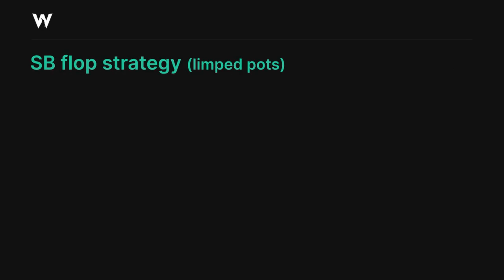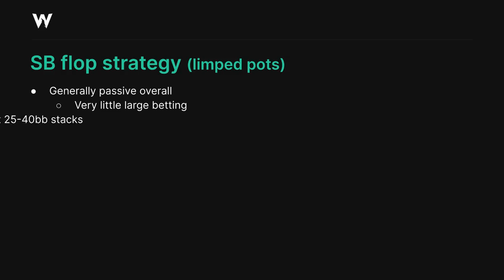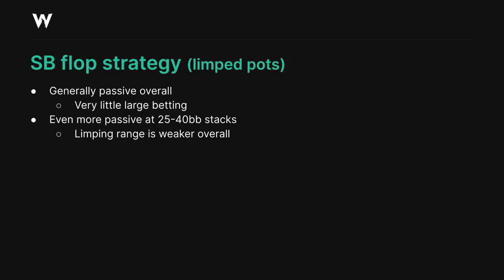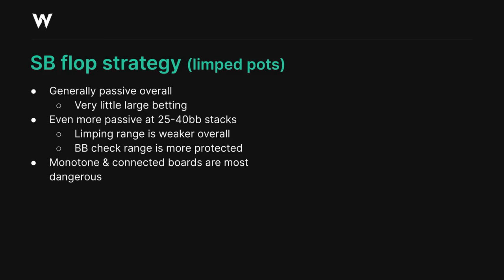In general, the small blind strategy in limped pots will be very passive overall, with very little large betting on the flop and a sub 50% frequency of small betting. It gets even more passive at middling stack sizes between 25 to 40 big blinds, because the small blind's limping range weakens and the big blind's checking back range becomes a little stronger. We should be the most wary on the monotone and connected boards, especially if the board is all low cards, while ace and king high disconnected boards do allow for a bit more betting.